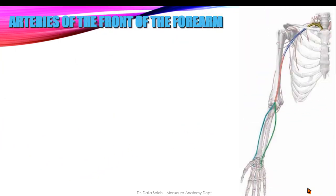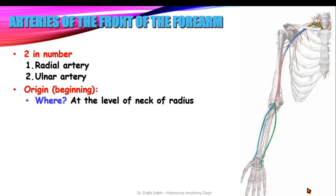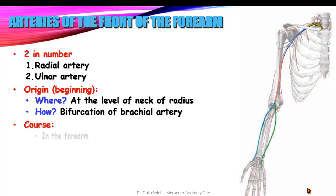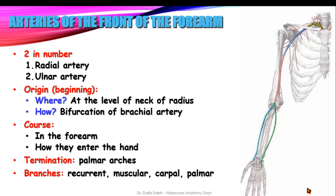The arteries of the front of the forearm are two: the radial artery and the ulnar artery. Both begin at the level of the neck of the radius from the bifurcation of the brachial artery. They descend in the forearm, enter the hand, and terminate there by becoming the palmar arches. They give recurrent branches at the elbow, muscular branches supplying the muscles at the front of the forearm, carpal branches at the wrist joint, and palmar branches at the palm of the hand.